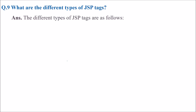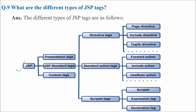What are the different types of JSP tags? JSP has presentation tags, JSP standard tags, and custom tags. Within JSP standard tags you have directive tags, standard action tags, and scripted tags. In the directive tags you have page directive, include directive, and taglib directive. In standard action tags you have forward action, include action, and use bean action. In scripted tags you have scripted expression tag and declaration tag.